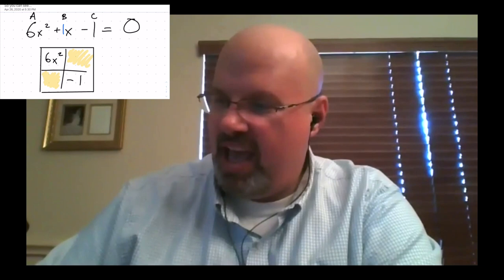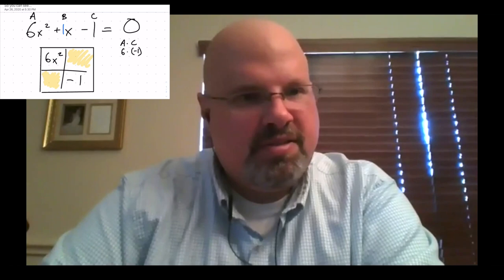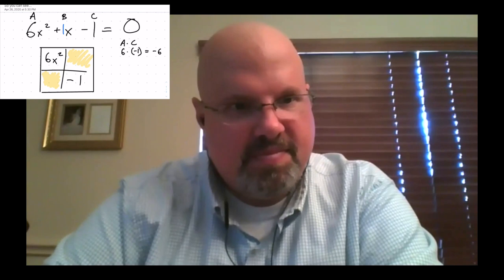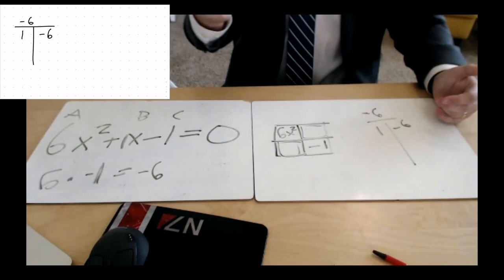And then what you're going to do is multiply a times c. So 6 times — is it 1 or negative 1? It's going to be negative 1. Now we're looking for a value that when you multiply them together gives you negative 6, but when you add those two numbers together you get positive 1. So you can look at the factors of negative 6. If I was listing them out, I might start with 1 times negative 6.